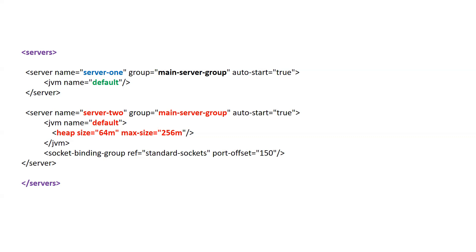For server two, I am overwriting the default JVM with a custom heap size of 64MB initial and 256MB maximum. This overrides the default configuration defined in domain.xml. This way you can have different JVM configurations for different individual JBoss server instances.